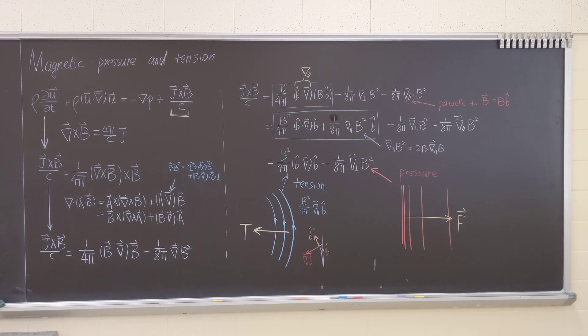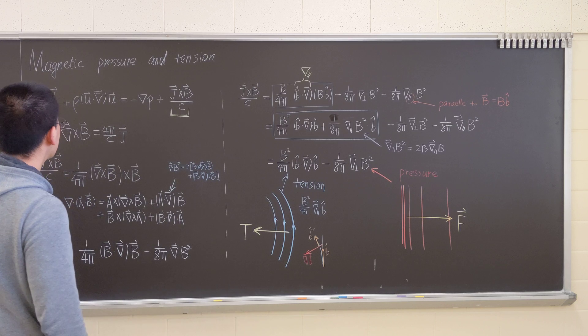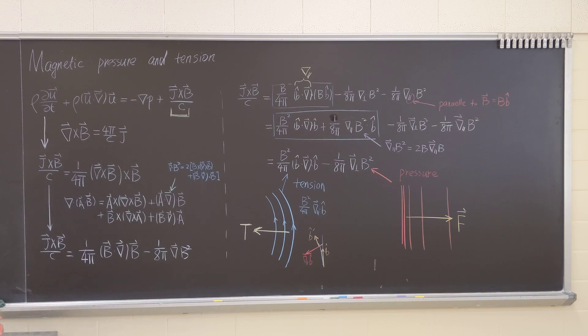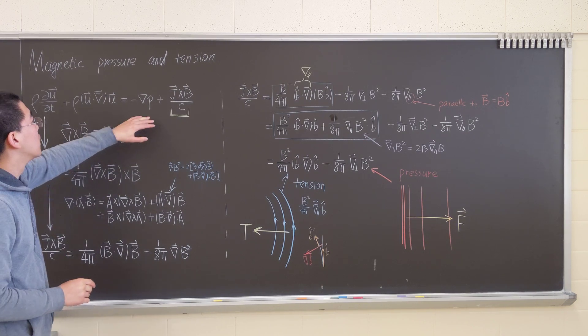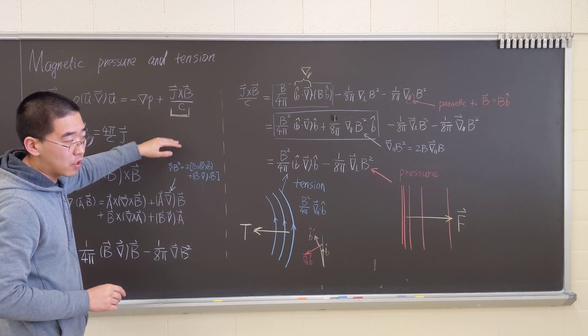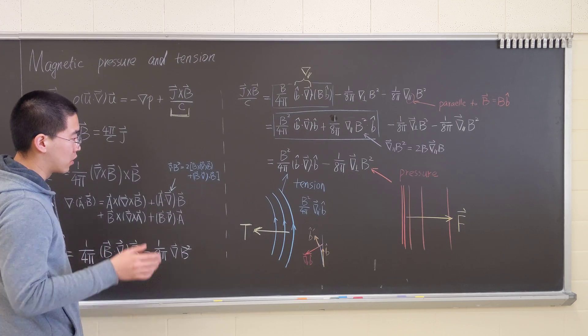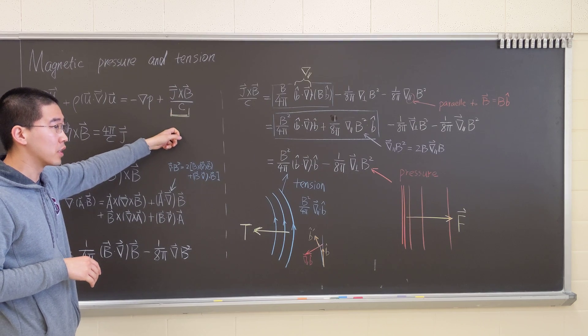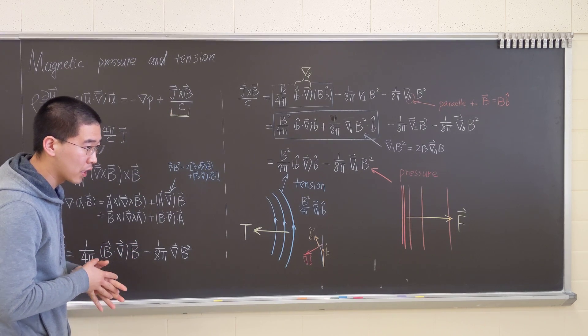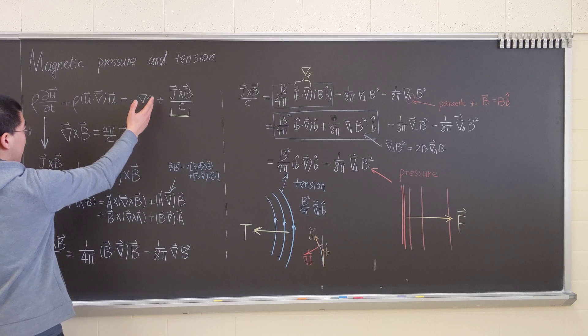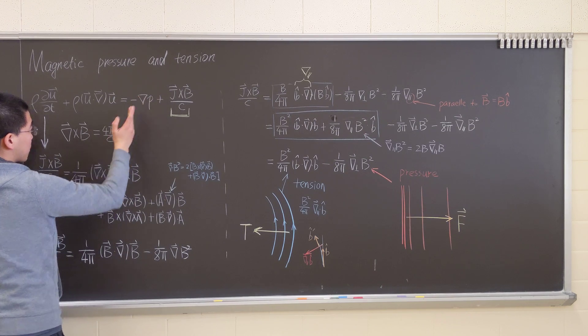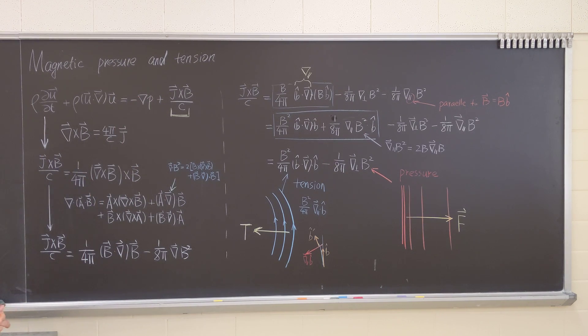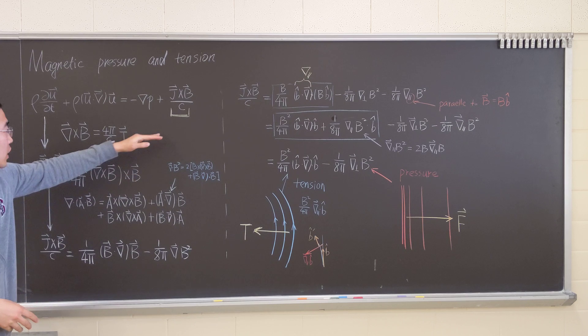Let me talk about magnetic pressure and tension. This is the momentum equation of the MHD equation. Except this term comes from the Lorentz force in the fluid equation, we need to study this part. Only this part comes from the electromagnetic effect, and if we only consider this portion, it will be purely hydrodynamic. So let's study this term.